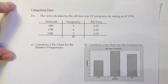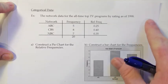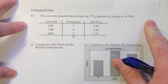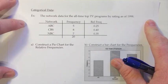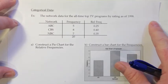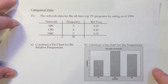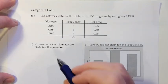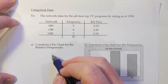We've finished the graphical displays for quantitative data and now move on to graphical displays for categorical data. We'll return to the network data from the previous section — networks ABC, CBS, and NBC — with frequencies and relative frequencies already computed. We'll construct a pie chart for the relative frequencies.